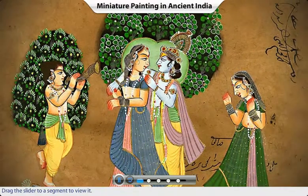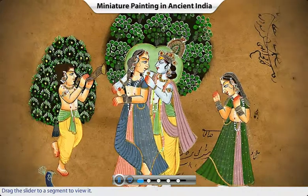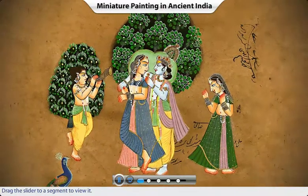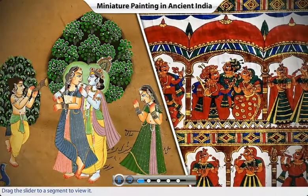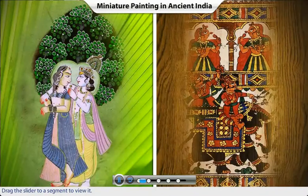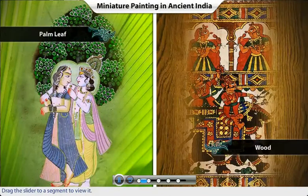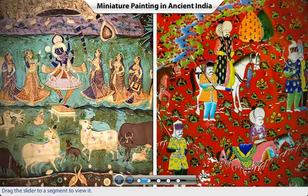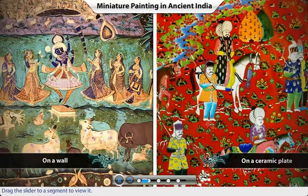Miniature painting is a traditional art style in which small-sized images are created mostly in watercolor, on cloth or paper. Miniature paintings are usually finely detailed. Some of the earliest miniature paintings were made on palm leaves or wood. Other miniature artworks were found on pots, walls, ceramic plates and other objects.